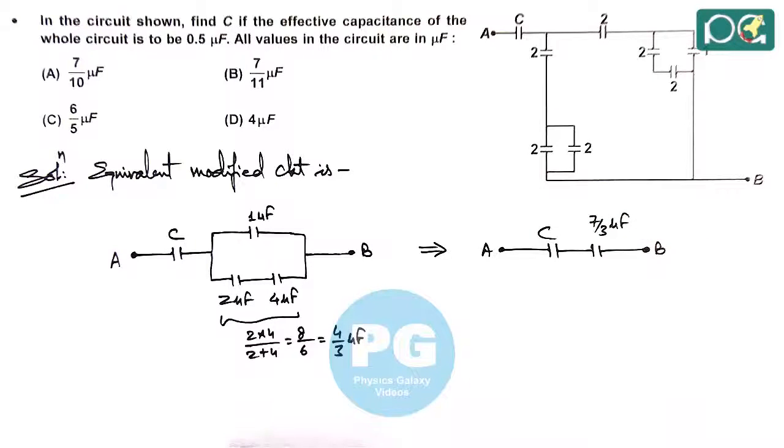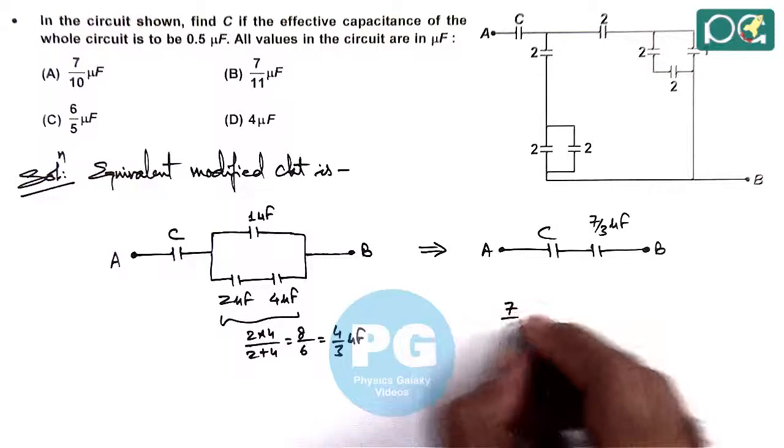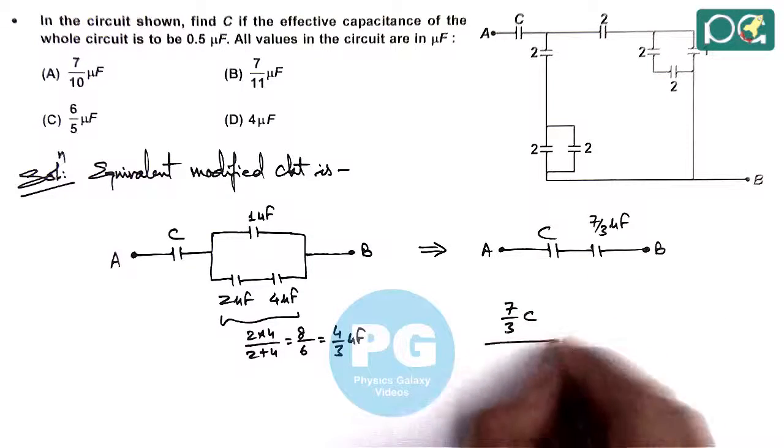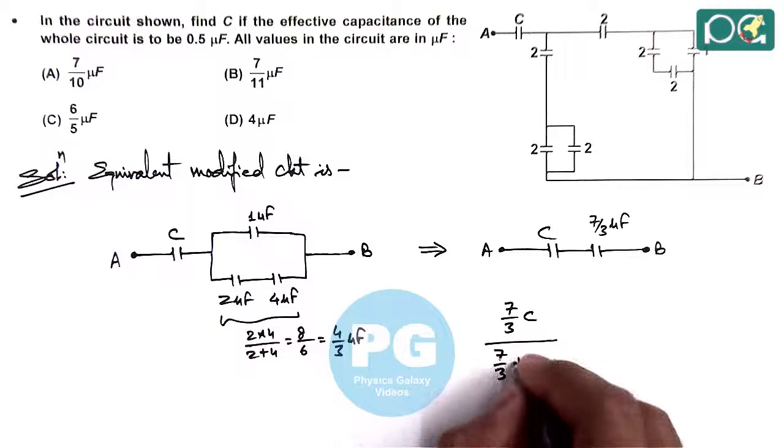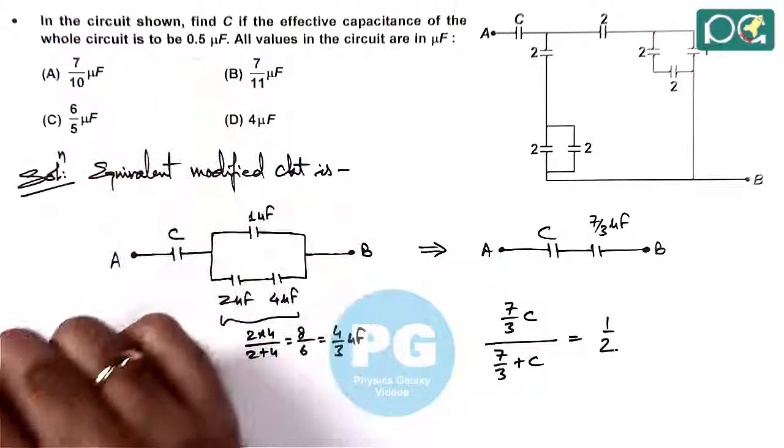Across A and B, the equivalent capacitance is (7/3 × C)/(7/3 + C), and this should equal 1/2 because the equivalent capacitance is given as 0.5.